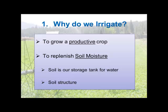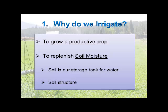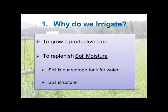So why do we irrigate? You want to grow a crop. If we have enough rainfall and the rainfall comes at the right time of the year, you don't need to irrigate. But that doesn't happen, so we sometimes have irrigation as an insurance policy, but more often because we want to grow a higher-value crop, larger volumes. And we do that by replenishing our soil moisture. The soil is really our gas tank when it comes to crops and irrigation — you put the water in, the crop takes the water out, very much like putting gas in your car.